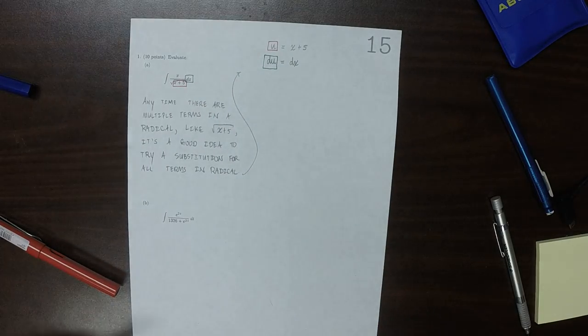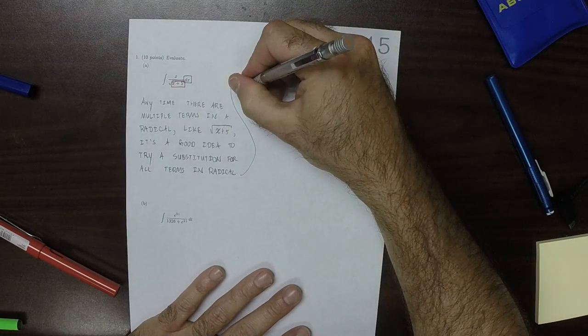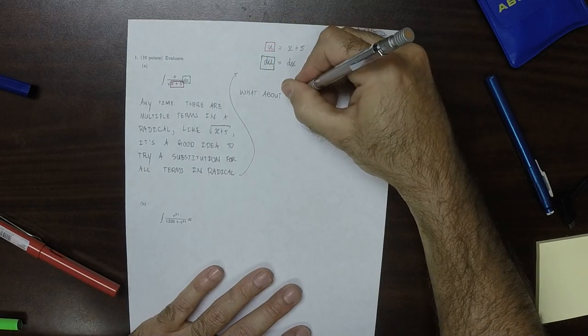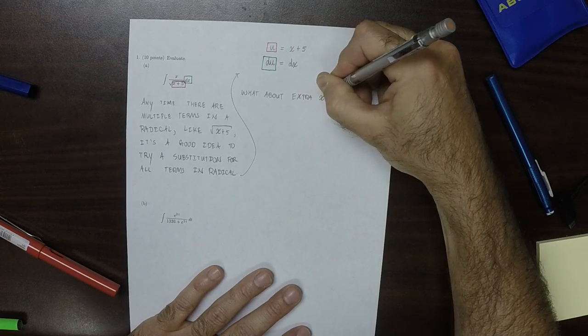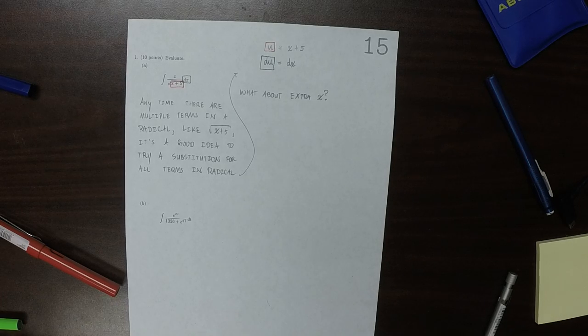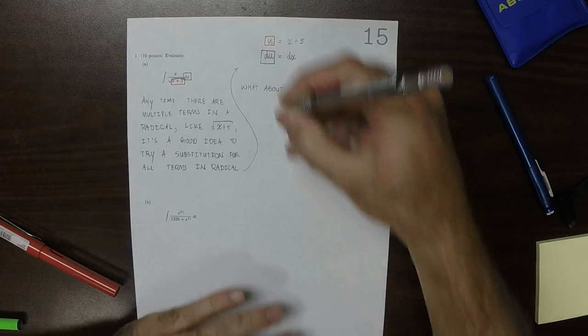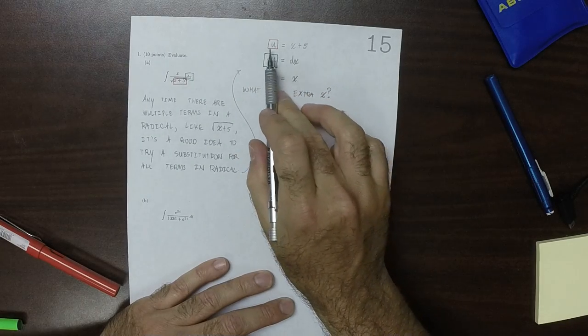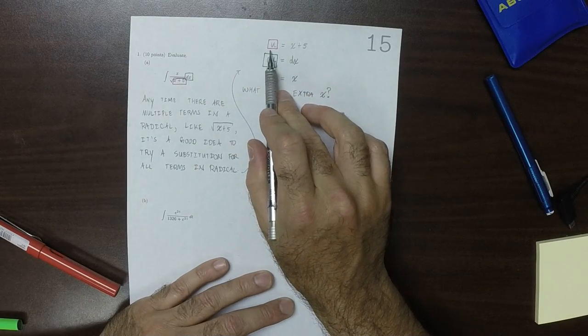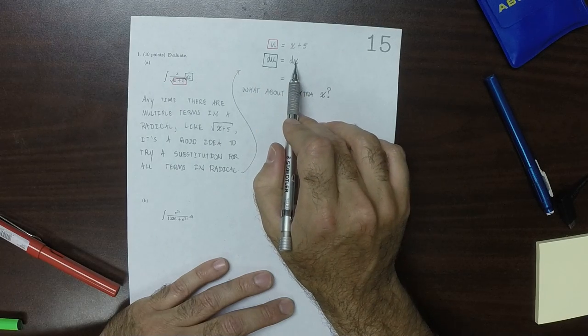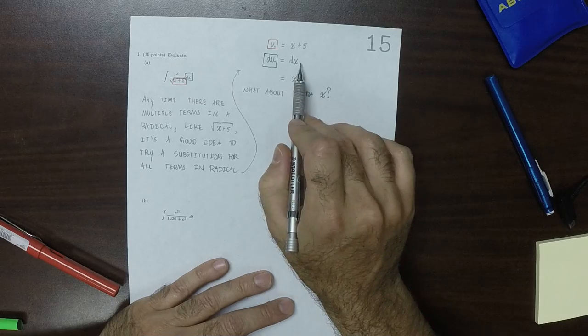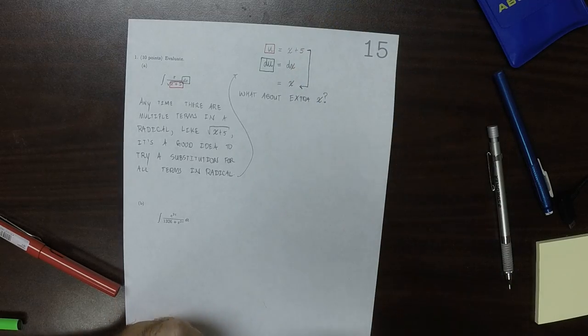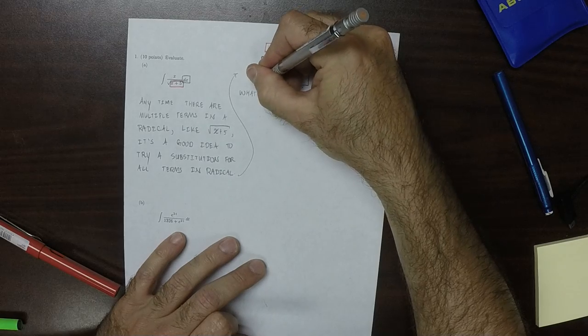But then we've got that extra x hanging out. And so the question is, what about the extra x? Well, we can solve for x. Which is to say that, notice that in these equations, we have u variables on one side and x variables on the other, du differentials and dx differentials on opposite sides. So we want an x. Well, notice that in this particular equation, we can solve for x. And if we do that, x is u minus 5.